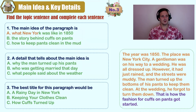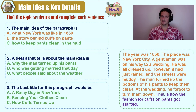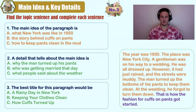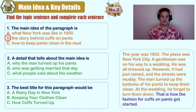Main idea: A) what New York was like in 1850 — that's very general; B) the story behind cuffs on pants — that's very specific; C) how to keep pants clean in the mud — that was the reason he turned his bottoms up, but it's not the main idea. Look at the words in purple: 'This is how the fashion for cuffs on pants got started.' This is a story about cuffs on pants and the history behind the first man that ever did it.